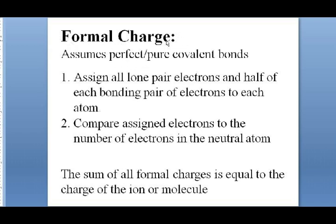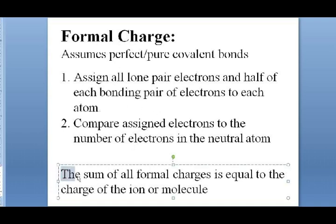Formal charge is a way of looking at electron distribution. It assumes perfectly purely covalent bonds, where each side of the bond exactly shares that pair of electrons. We assign all the lone pairs on an atom to that atom, and half of each bonding pair to each atom. Then we compare the number of electrons assigned to the number in the neutral atom to determine the formal charge. Importantly, the sum of all formal charges on the entire molecule equals the charge of the ion or molecule.